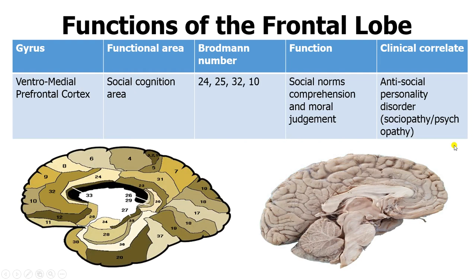The ventromedial prefrontal cortex is located near the corpus callosum — which connects the two hemispheres of the cerebrum — in the subcallosal area. This region includes part of the cingulate gyrus above the corpus callosum. It integrates a great deal of emotion because it is considered part of the limbic system, which is what integrates human emotions. This area allows you to comprehend social norms and make moral judgments, and is also known as the social cognition area.